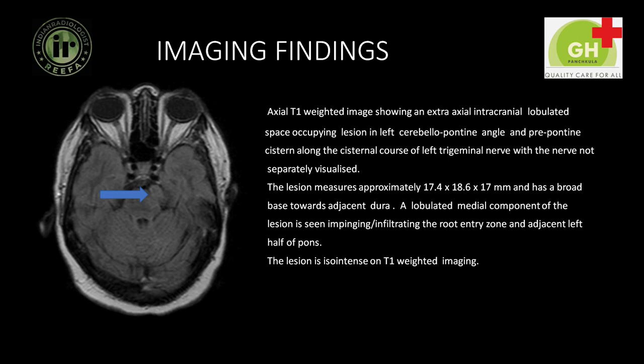The imaging findings are: on axial T1 weighted image, there is an extra-axial intracranial lobulated space-occupying lesion in the left cerebellopontine angle and pre-pontine cistern along the cisternal course of the left trigeminal nerve, with the nerve not separately visualized. The lesion measures approximately 17.4 x 18.6 x 17 mm and has a broad base towards the adjacent dura. A lobulated medial component of the lesion is seen impinging or infiltrating the root entry zone and adjacent left half of the pons. The lesion is iso-intense on T1 weighted imaging.